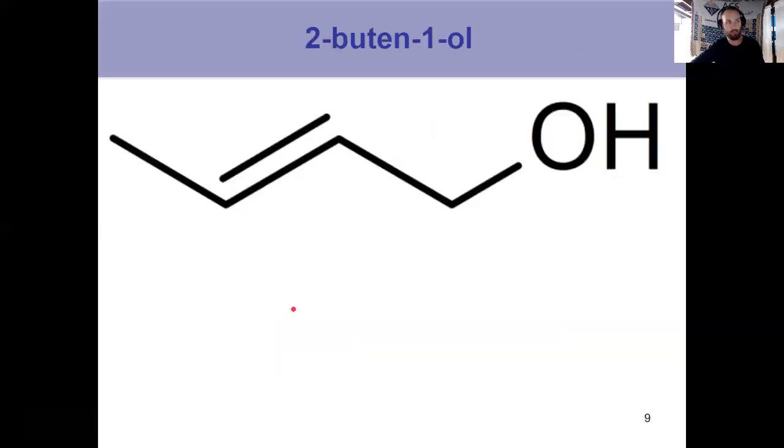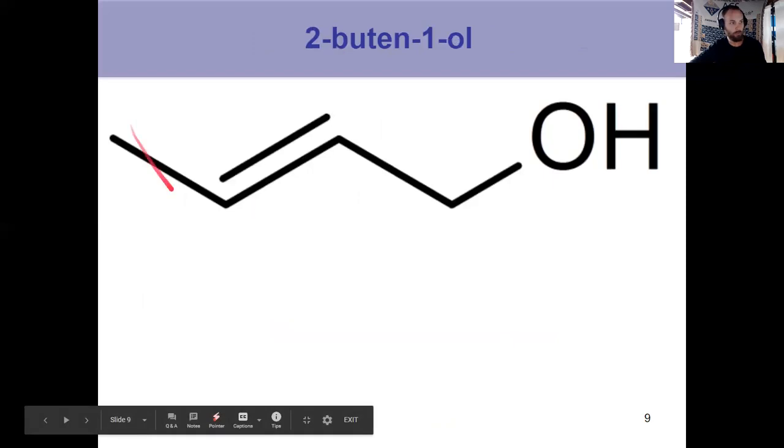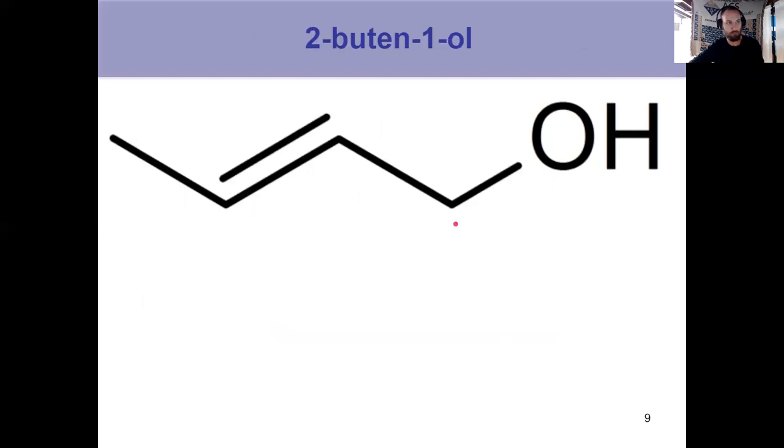So if I look at two-butan-one-ol here, one, two, three, four gives me butane. It goes to butene, and then I get the OL from the alcohol. Two-butan tells me the EN here starts at carbon two. Right there. Sorry, right here. And then one OL tells me the alcohol is on carbon one. So butane, four, EN, double bond, starting at C2, and then the alcohol is on C1. Notice I'm not going two, one, butanol. This is a situation where you have to put a number right before the suffix when you have multiple functional groups.